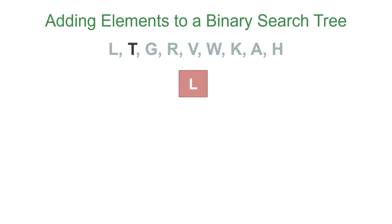Then T comes after L in the alphabet, so it's going to be in the right subtree. G comes before L, so it'll be in the left subtree. R is after L, but before T, so it'll be in T's left subtree. V comes after L after T, so it'll be in the right subtree of T.